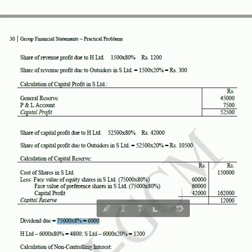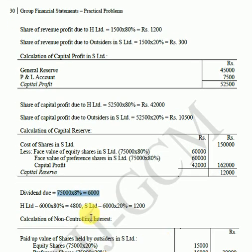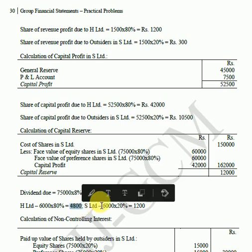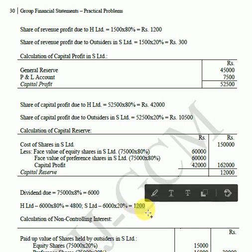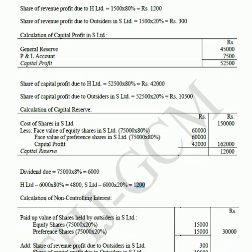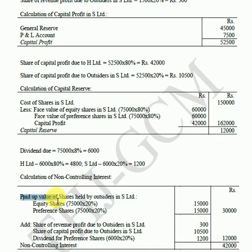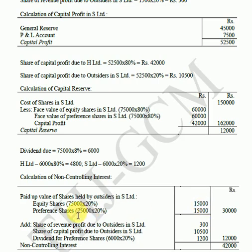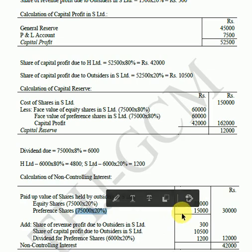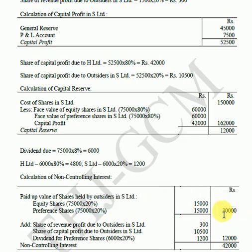For the non-controlling interest calculation, we compute the paid-up value of shares held by outsiders in S Limited. Outsiders hold 20% of equity shares: Rs.75,000 into 20% equals Rs.15,000. Outsiders also hold 20% of preference shares: Rs.75,000 into 20% equals Rs.15,000. Total paid-up value held by outsiders is Rs.30,000.